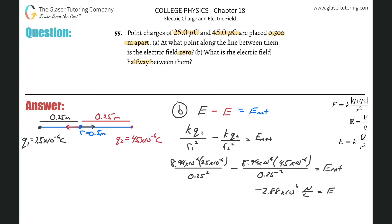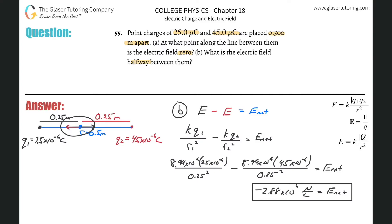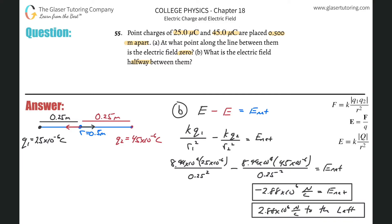That's going to be the net electric field. The negative sign just means that it is pointing, in terms of how I organized my picture, to the left. So the magnitude is simply 2.88 × 10⁶ newtons per coulomb, to the left. The magnitude is what's important here because you could have had the picture flipped — it could have been a vertical problem. But that's letter B.